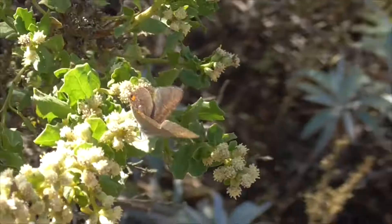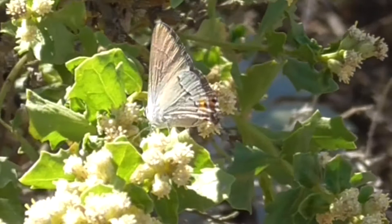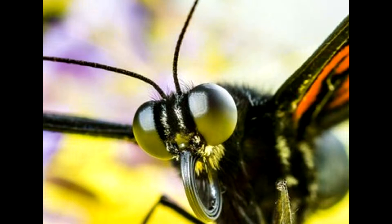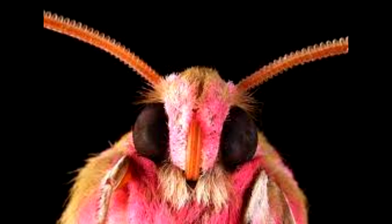Now for their eyes, butterflies have what is called apposition eyes, which are built for the daytime. It allows them to process multiple, high-quality images. And moths have superposition eyes, which are built for nighttime. It allows them to see 1,000 times brighter than butterflies, but it only gives them a low-quality image.